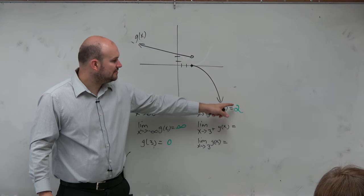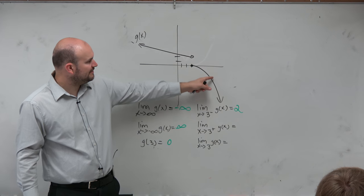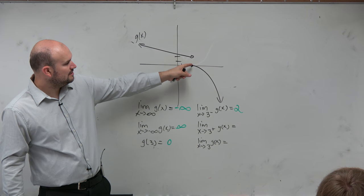Let's try it from the right. From 3 from the right, as we approach 3 from the right, we're getting really close to 0.